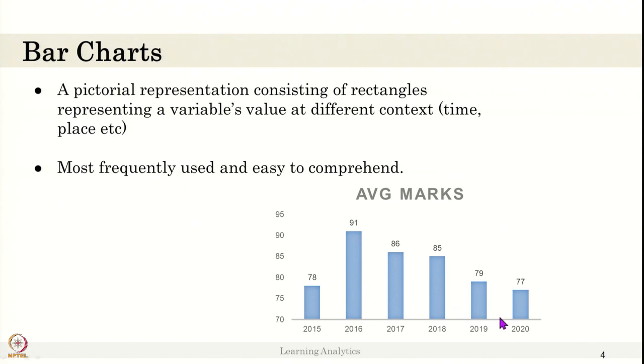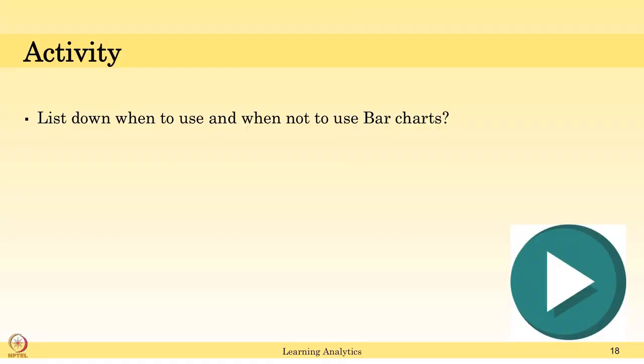This kind of simple representation using rectangles represents as a bar chart. It gives inference that comparing one year data to other year data at different times. Also, this is most frequently used and easy to understand. Now, consider when to use this bar charts and when not to use this bar charts. At least list down two points for when to use and list down two points for when not to use bar charts. After you writing down your answer, resume the video to continue.